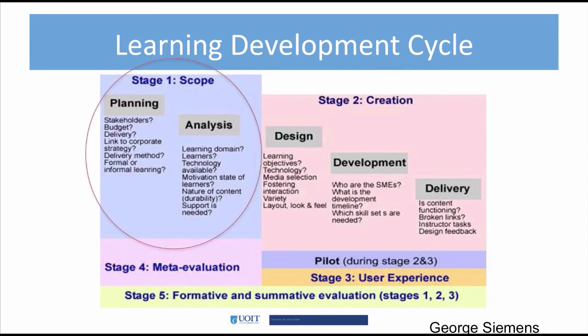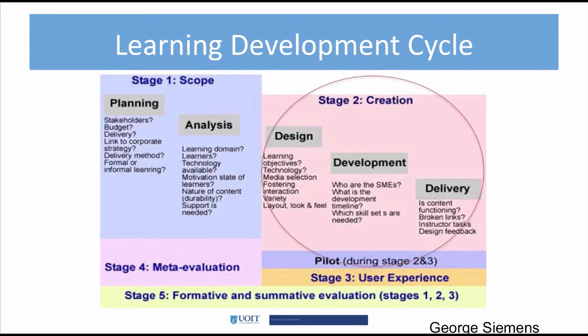Stage one is where we could make the decisions about what type of learning — will it be formal, informal, or another type of design? Consideration for this choice often resides in the budget and delivery. The analysis portion of stage one focuses on the learner, such as motivation and technology. The second stage is the creation stage, where design, development, and delivery takes place. As the diagram illustrates, this is often assessed and change is made after the pilot or trial of the session is run.